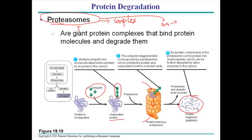Enzymes can further degrade these protein fragments into individual amino acids. The cell takes up these amino acids for different anabolic purposes — using ATP to make several different cellular components via metabolic pathways. This concludes the final step of protein degradation.